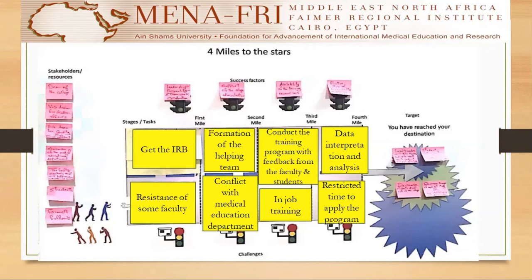I have four stages to reach the outcomes. Number one, get the IRB approval. Number two, formation of the helping team. Number three, conduct the training program with feedback from faculty and students. Number four, data interpretation and analysis.